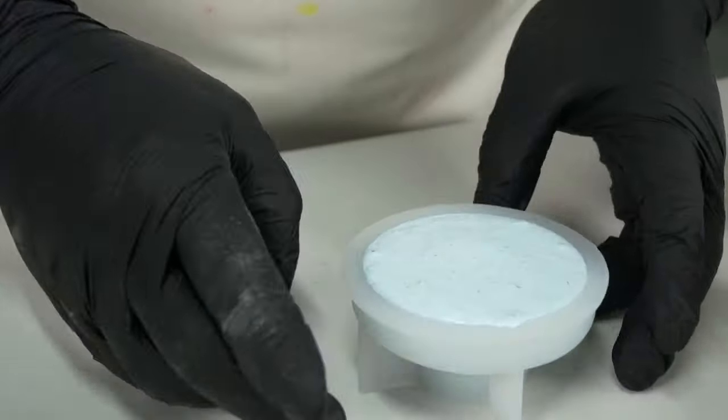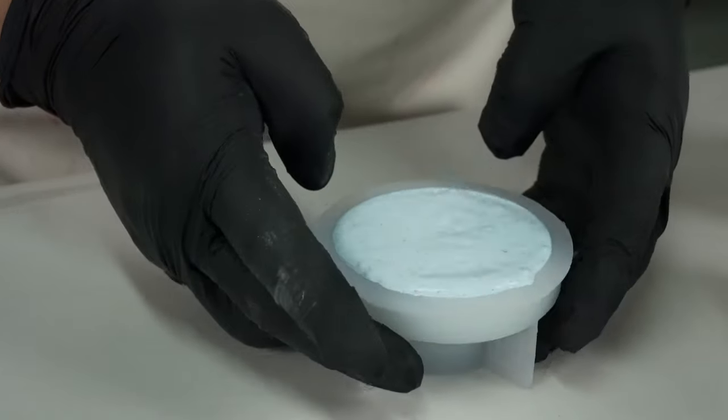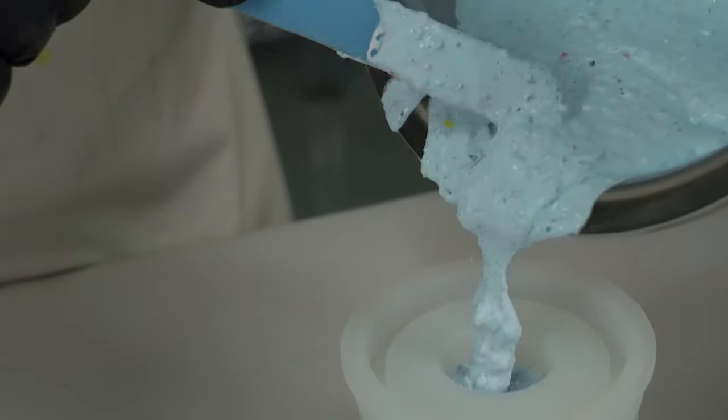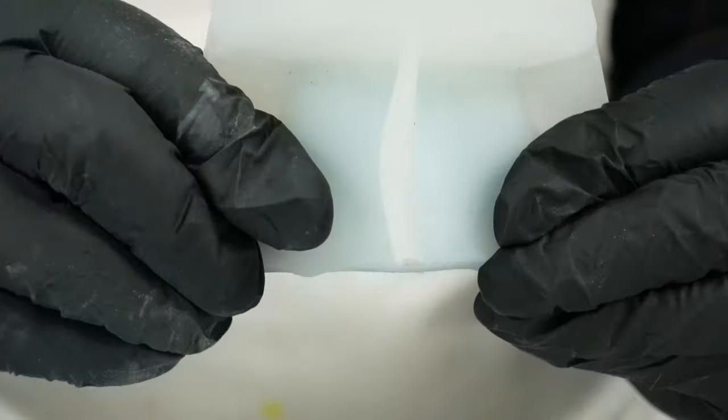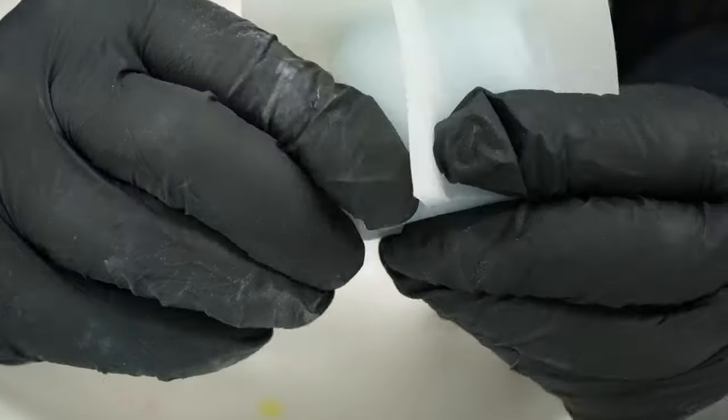After pouring, we need to gently tap the edge of the mold. The remaining two candlesticks are also the same process. You just need to watch my technique carefully.